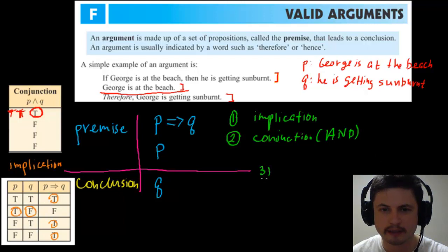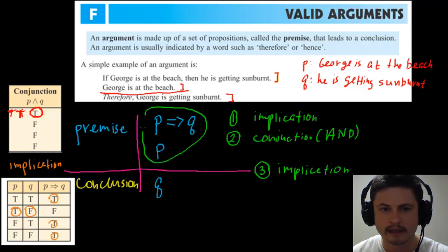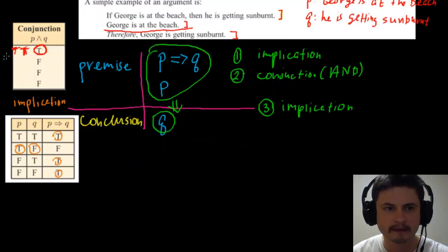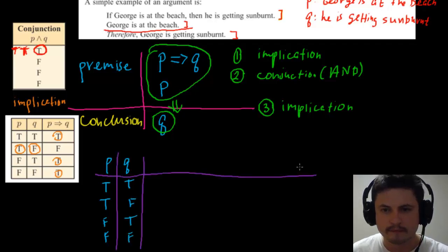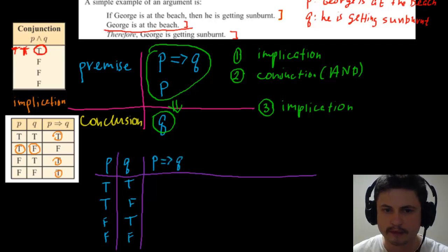The third step is another implication, but this time it's the implication of the whole thing. It's the entire conjunction implying Q. Let's make this into a table. I'll write out our P and Q values: true-true, true-false, false-true, false-false. The next column is implication — if P then Q.